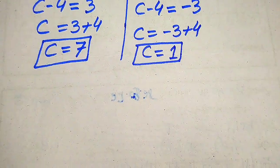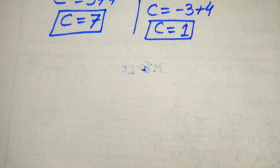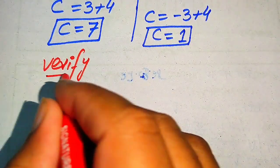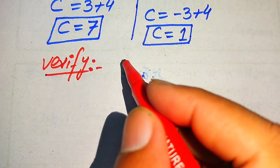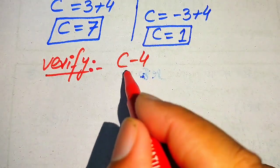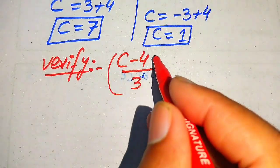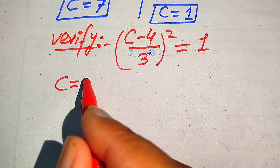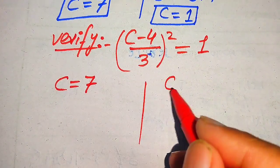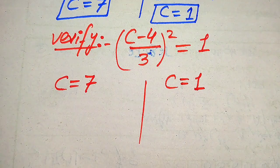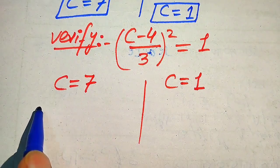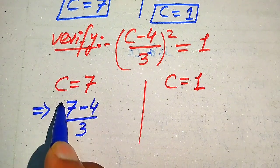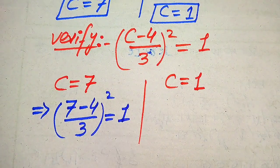On both methods we get the same roots of the given equation. Now we verify whether both roots are solutions or extraneous roots. For verification, we copy down the given question statement: (C minus 4) divided by 3, whole squared, equals 1. We verify C equals 7 on the left side and C equals 1 on the right side.